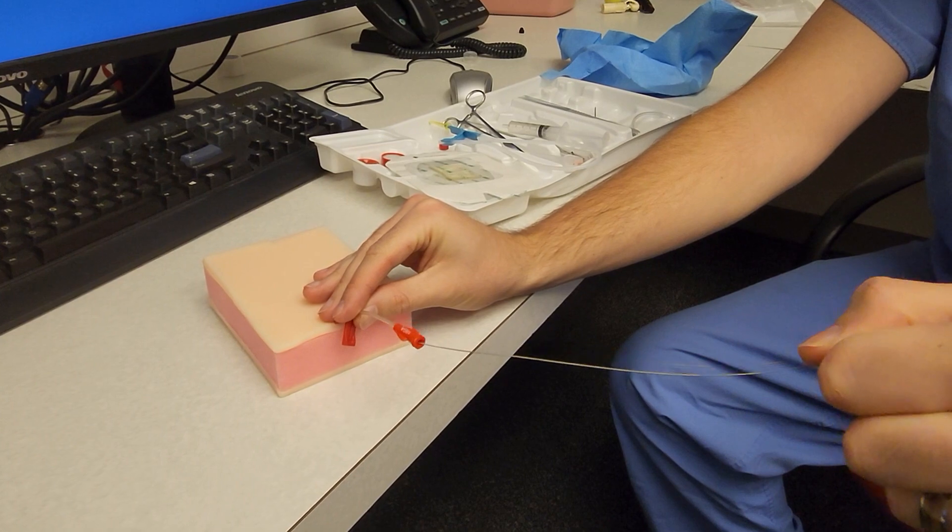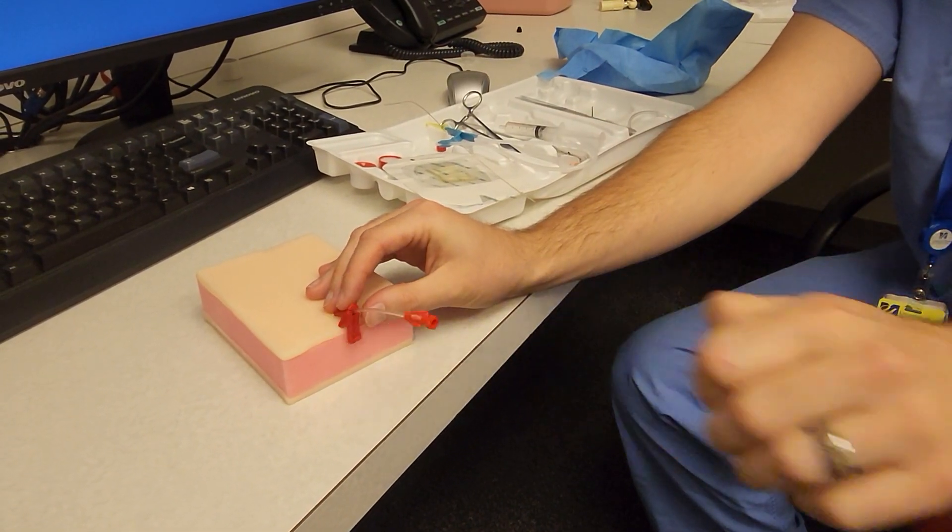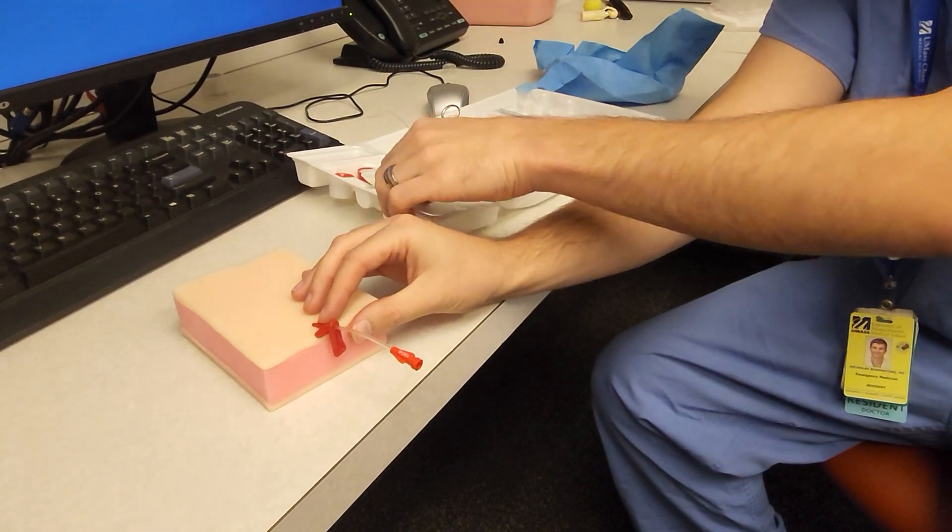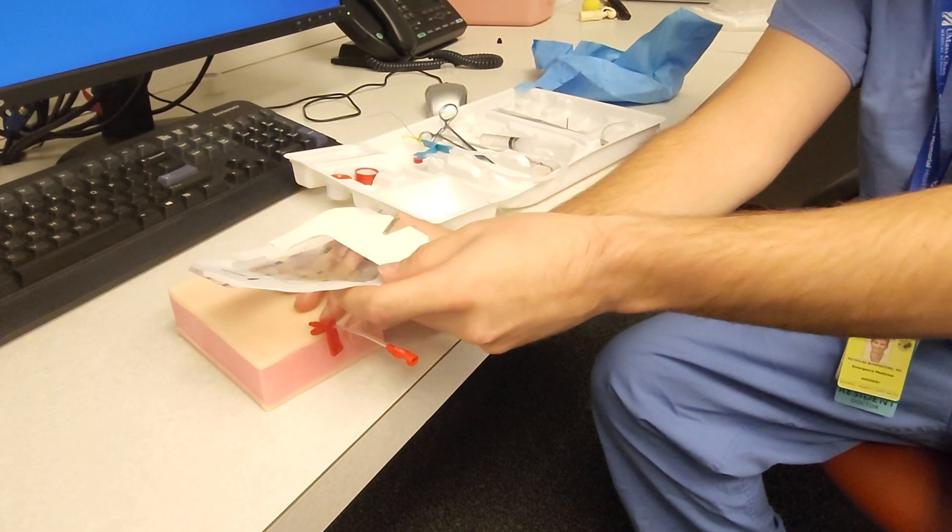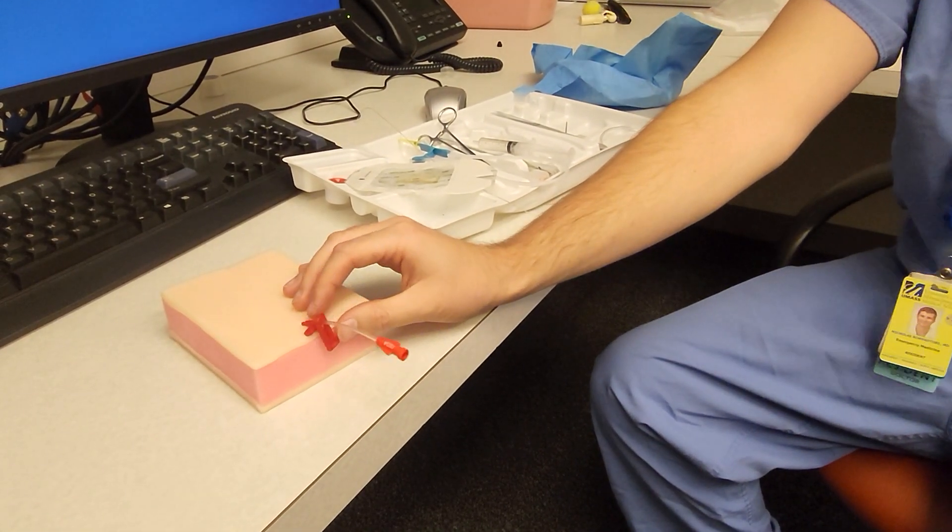Remove the wire and then connect this to your arterial line setup. Suture it into place and place Tegaderm. And that is it.